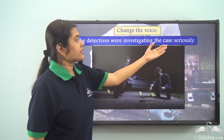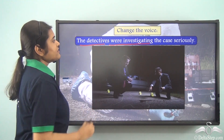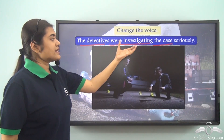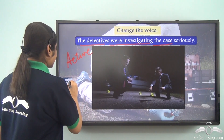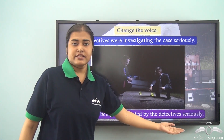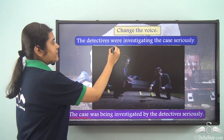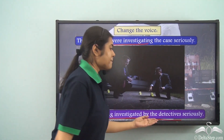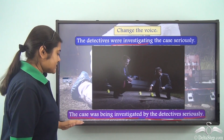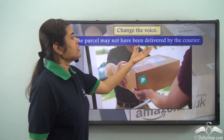'The detectives were investigating the case seriously.' The verb is 'were investigating', the subject is 'the detectives', and the object is 'the case'. 'Were investigating' tells us this is in the past continuous tense and in the active voice. In passive voice the sentence becomes: 'The case was being investigated by the detectives seriously.' We place the object in the subject position, and the verb form 'were investigating' changes to 'was being investigated', followed by the doer 'by the detectives' and the rest of the sentence.